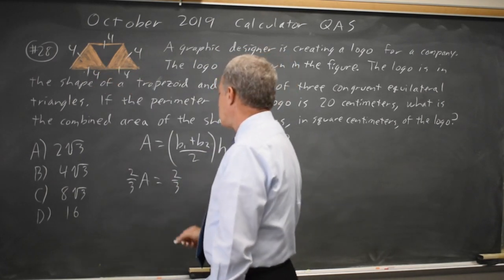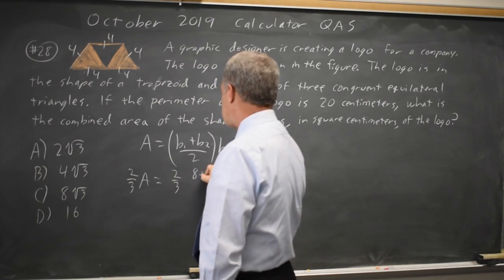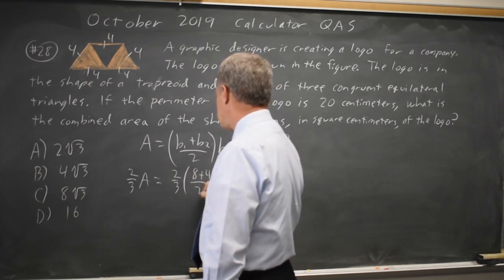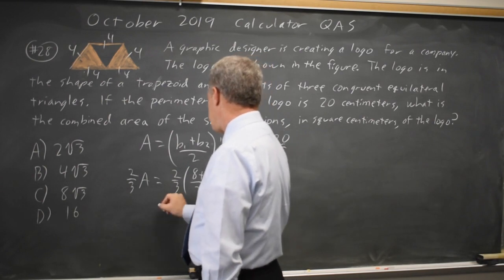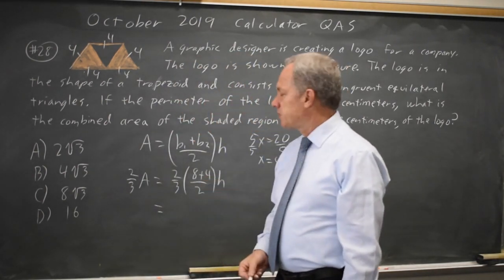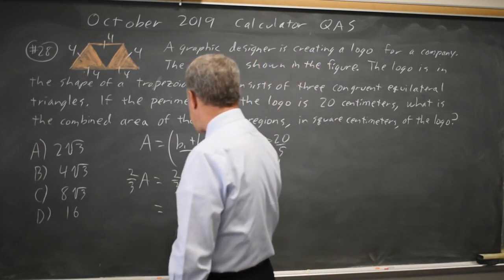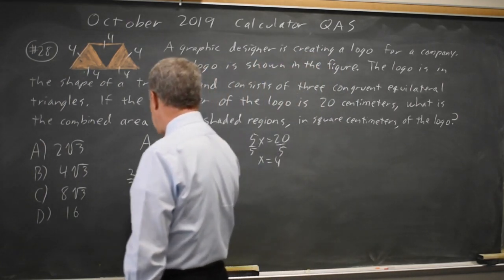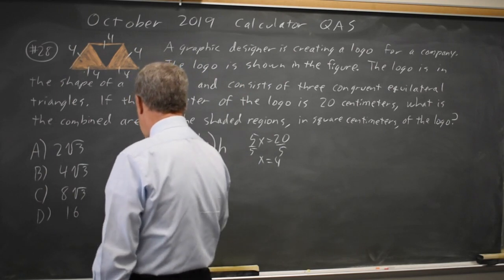Is 2 thirds of 8 plus 4 over 2 times the height. So 8 plus 4 over 2 is 12 over 2 is 6, and 2 thirds of 6 is 4.